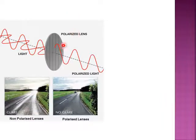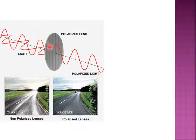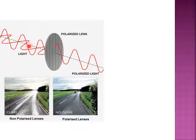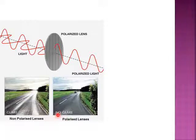In polarised sunglasses, when multiple light beams fall on the glass, only those beams which are parallel to the polariser will be allowed through, and all other beams will be filtered. Because of this filtering mechanism, the glare is made zero and the visibility is increased.